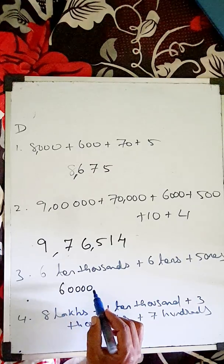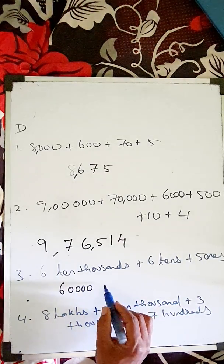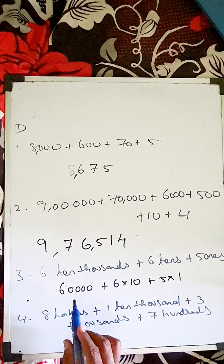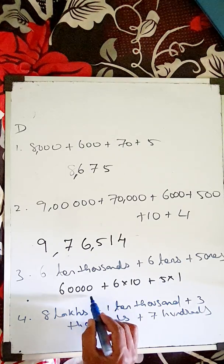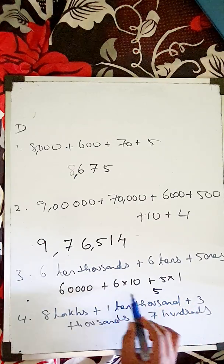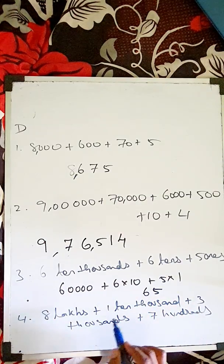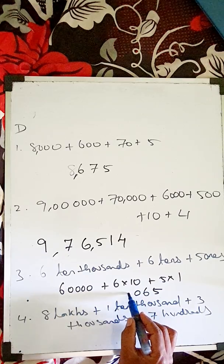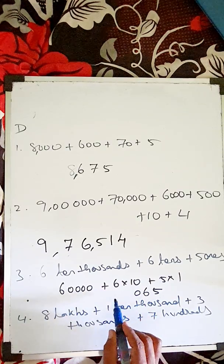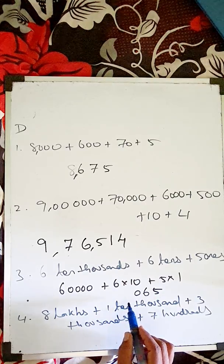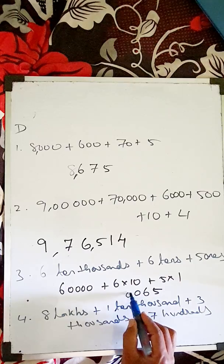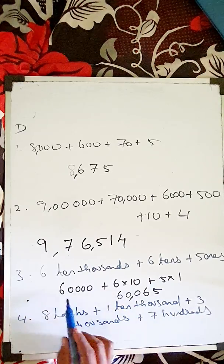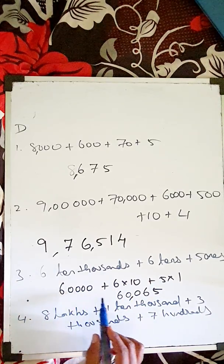Six ten-thousands is sixty thousand. Plus six tens is sixty. Plus five ones is five. So the number is sixty thousand sixty-five: 60,065. Put three-number comma: 60,065.